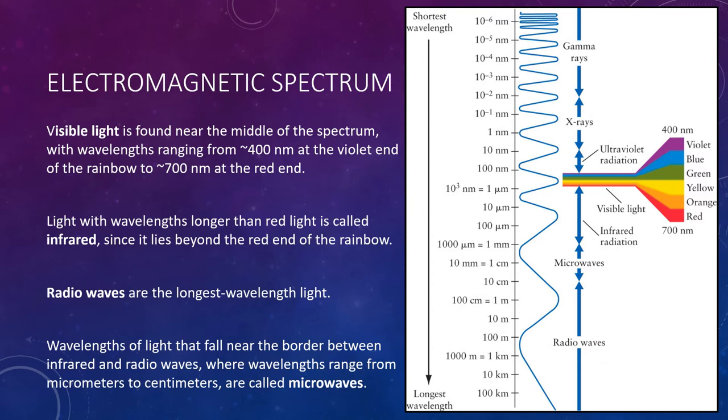Light with wavelengths somewhat longer than red light is called infrared, because it lies beyond the red end of the rainbow. Radiowaves are the longest wavelength light. Wavelengths of light that fall near the border between infrared and radiowaves are sometimes given the name microwaves. In astronomy, you may occasionally hear portions of the microwave band described more specifically by wavelength. For example, science conducted with telescopes optimized to detect microwaves with wavelengths of around one to a few millimeters is often called millimeter astronomy. And science conducted with wavelengths of tenths of a millimeter is often called sub-millimeter astronomy.